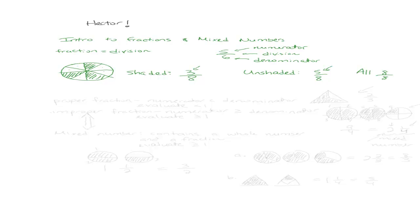So let's define some terms. A proper fraction is a fraction whose numerator is less than the denominator. We can easily picture one of those fractions. Say we have a triangle divided into 3 pieces, and 2 of those pieces are shaded. I can represent the shaded portion of this triangle as 2 thirds. That is a proper fraction — the numerator is 2, which is less than the denominator.